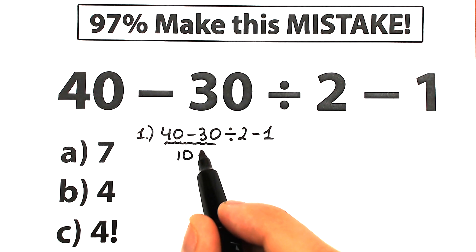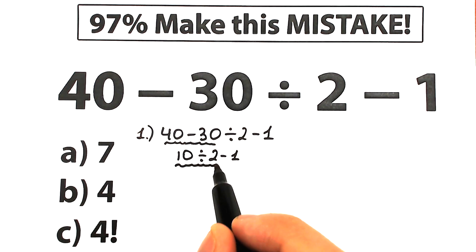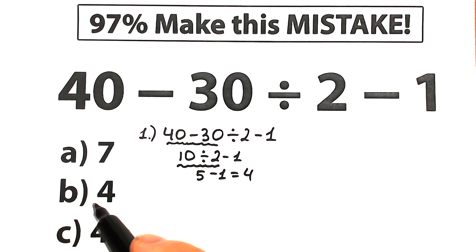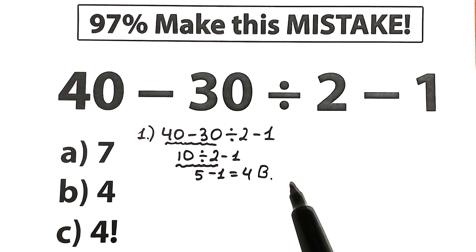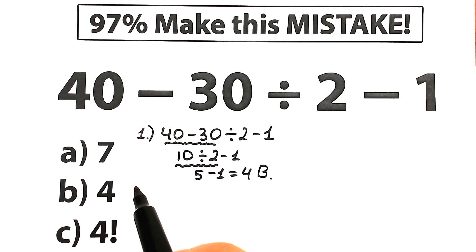We still have 10 divided by 2 and minus 1. So right here we have 10 divided by 2 equal to 5. And 5 minus 1 from here equal to 4. So a lot of students say the correct answer is B. They say that this is absolutely correct solution and a correct answer.